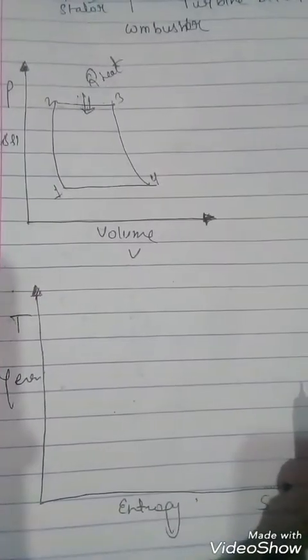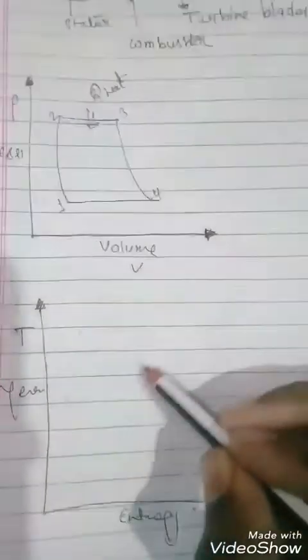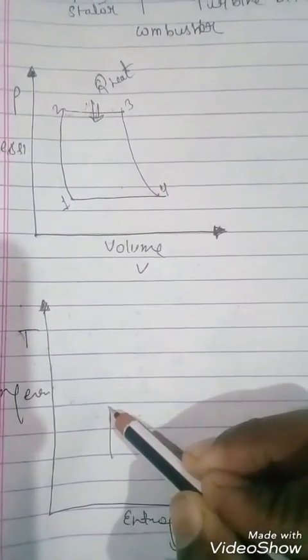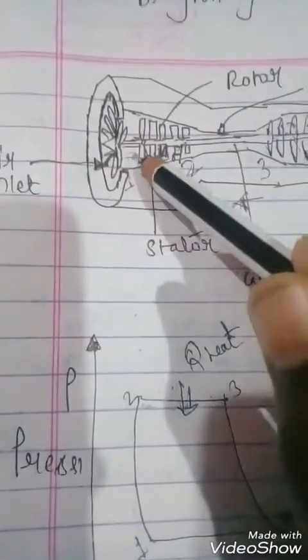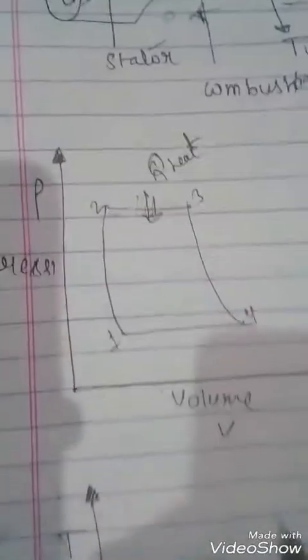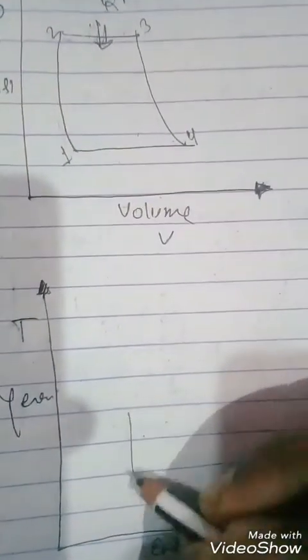This is our temperature-entropy diagram. From one to two, the temperature increases when the air is sucked inside the jet engine. The temperature of the air gets increased, so from one to two the temperature increases.